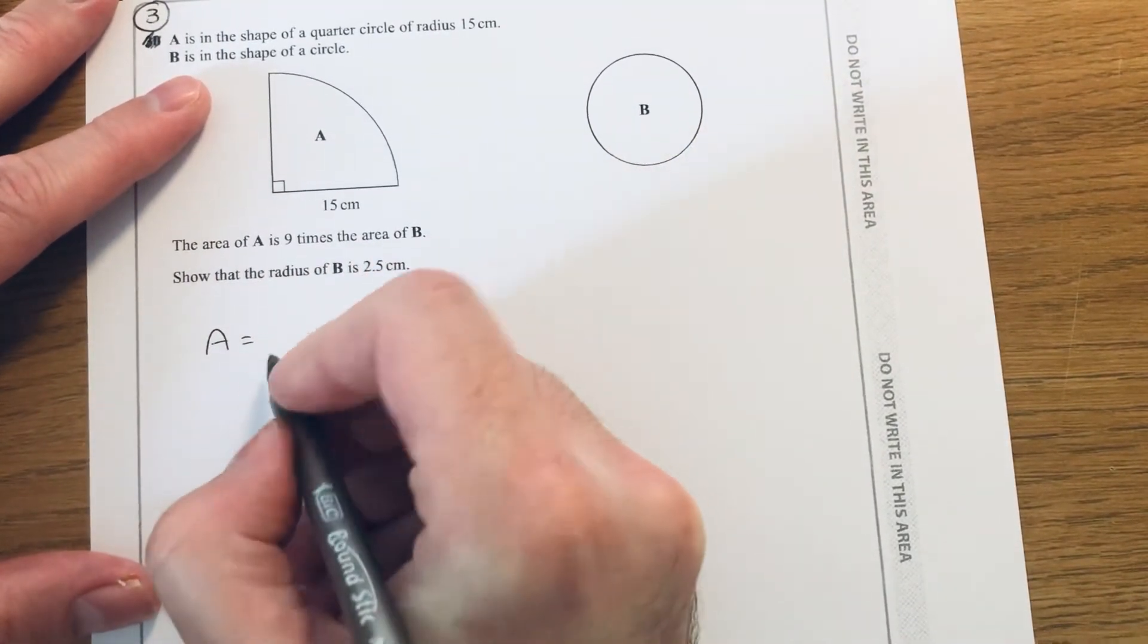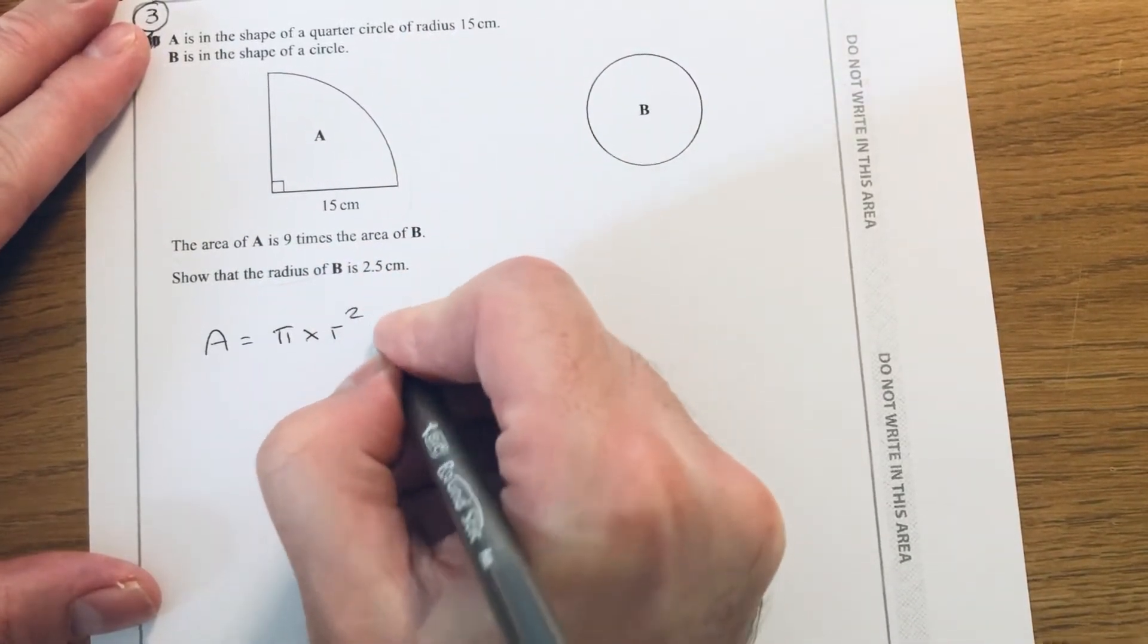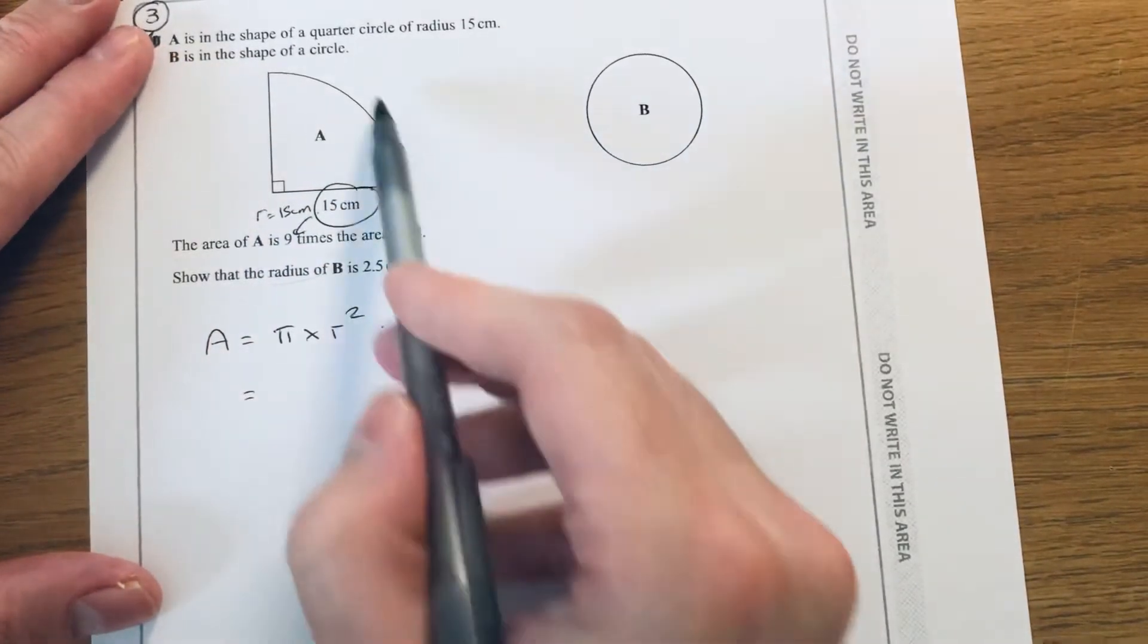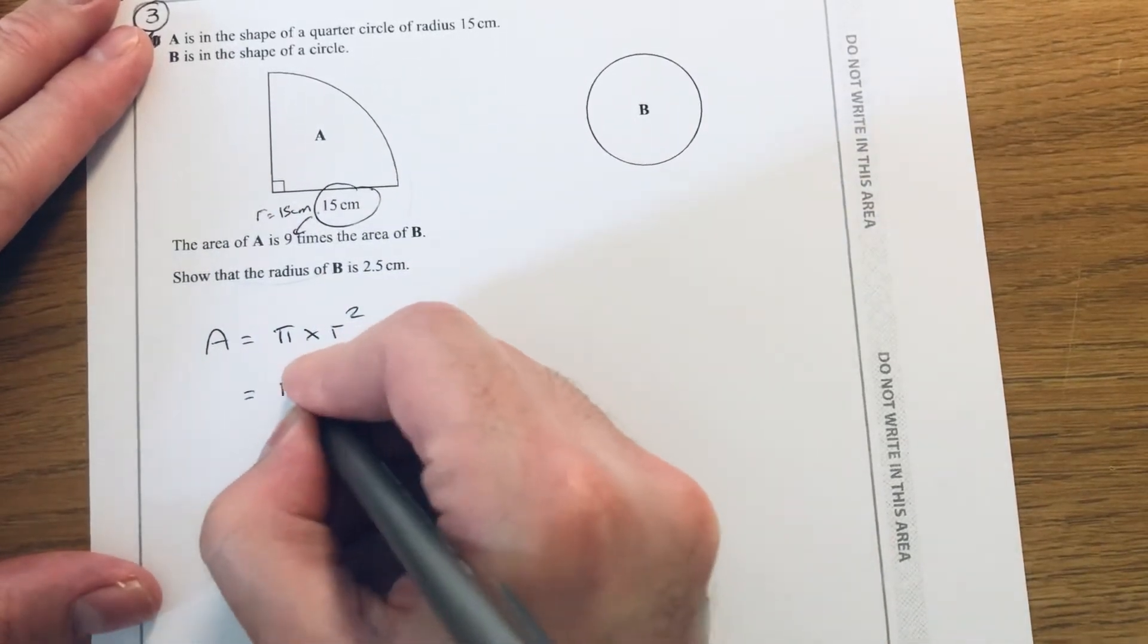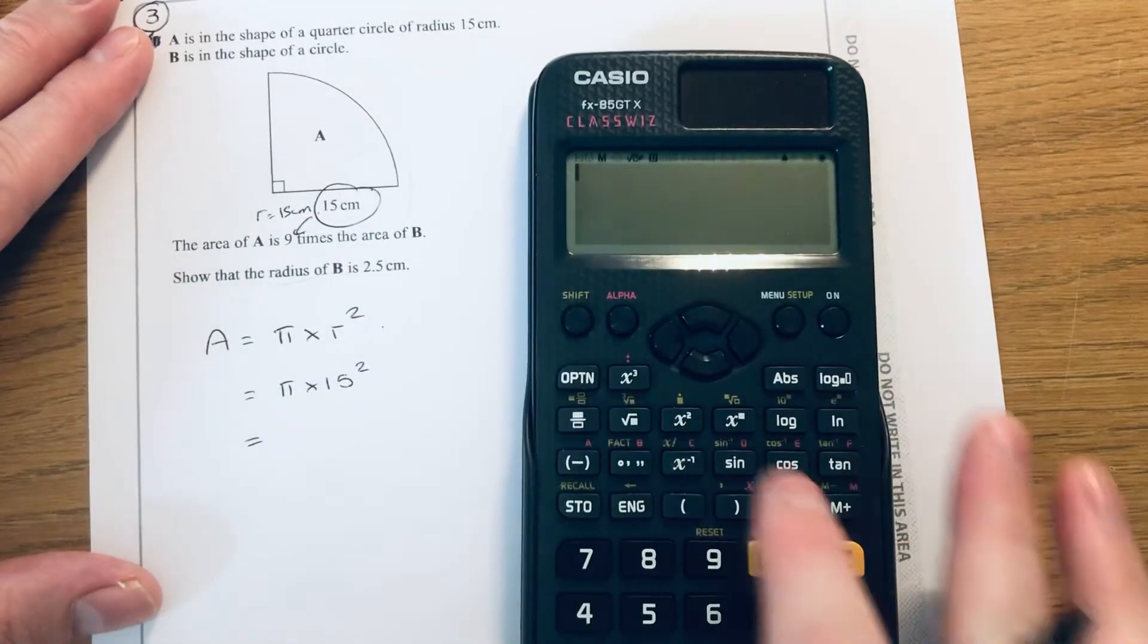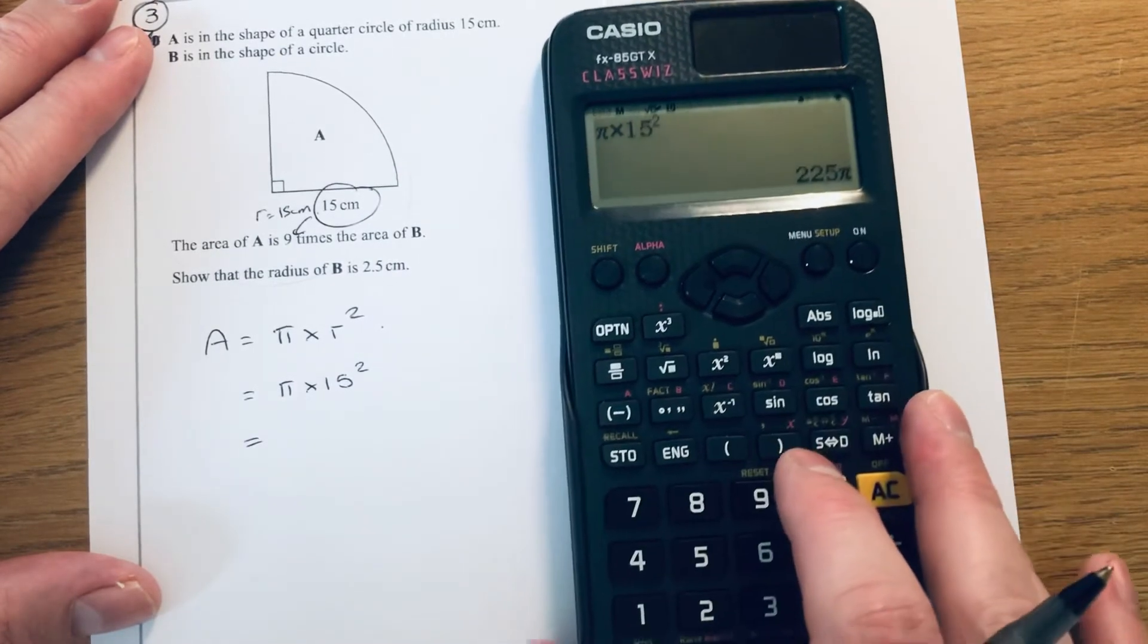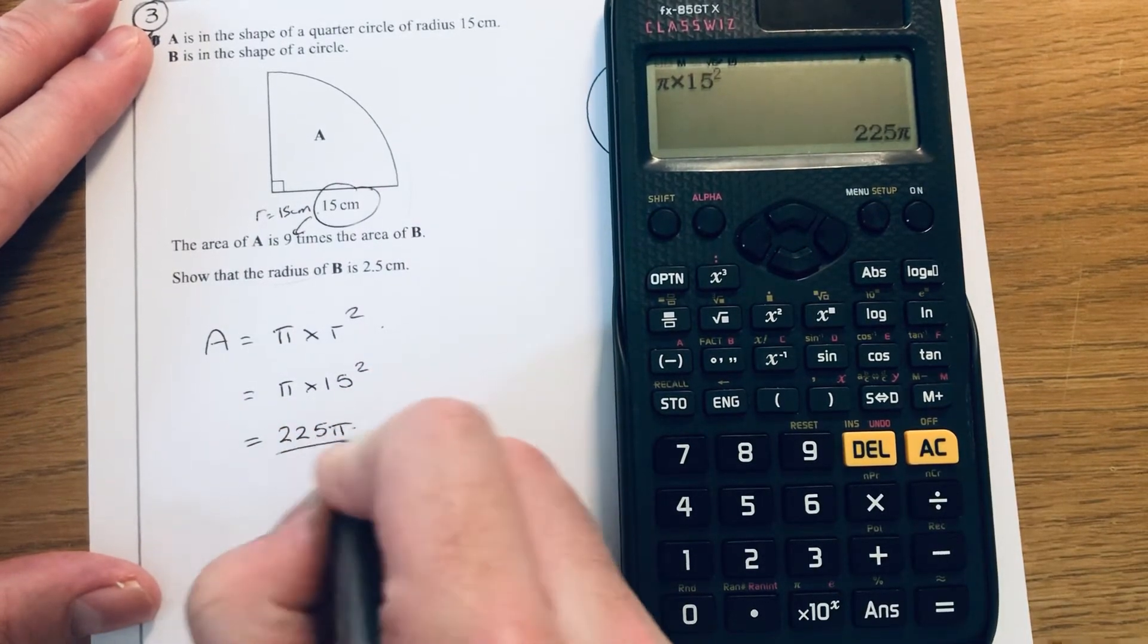Okay, so the first thing we're going to do then is work out the area of this quarter circle here. You can do this by working out the area of the full circle. So to work out the area of the circle, we do pi times r squared. This number here would actually be the radius of the full circle because you've got to imagine that's the full circle there and that's halfway across. So that's the number we put into our formula. If we put that in on our calculator, you get shift pi times 15 squared, which is 225 pi. So that's the area of the full circle.